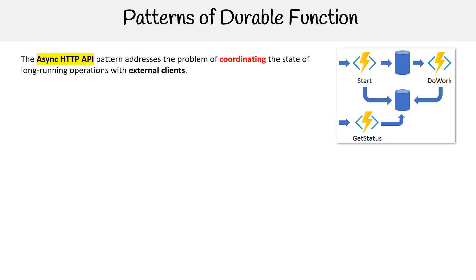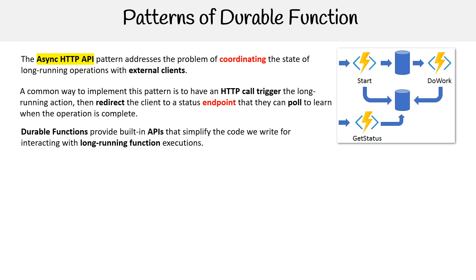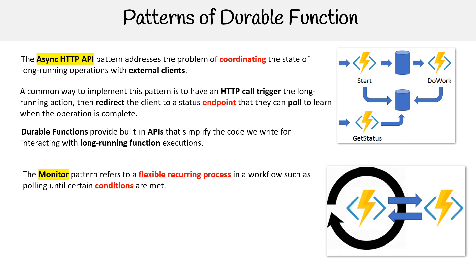We have async HTTP API. This pattern addresses the problem of coordinating the state of long-running operations with external clients. A common way to implement this pattern is to have an HTTP call trigger the long-running action, then redirect the client to a status endpoint, then they can poll to learn when the operation is complete. Durable functions provide built-in APIs that simplify the code we write for interacting with long-running function executions.